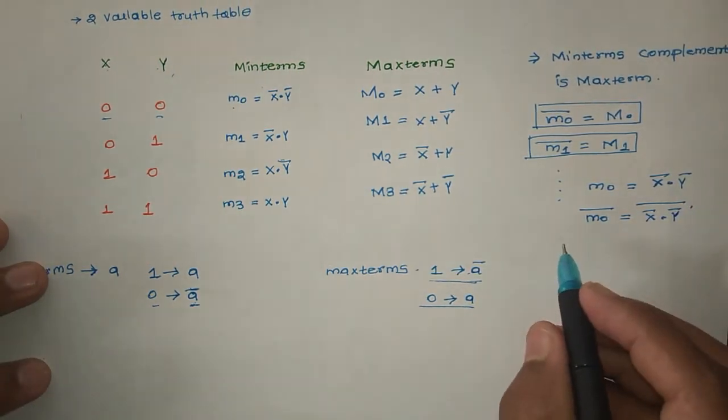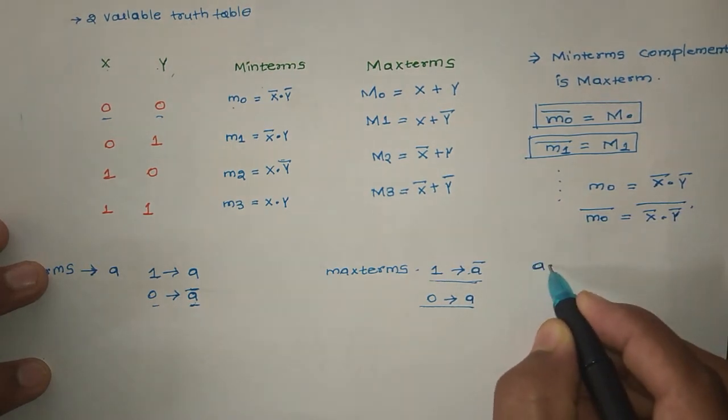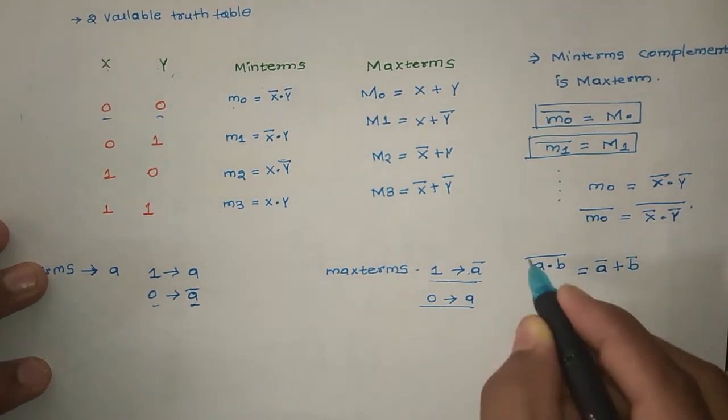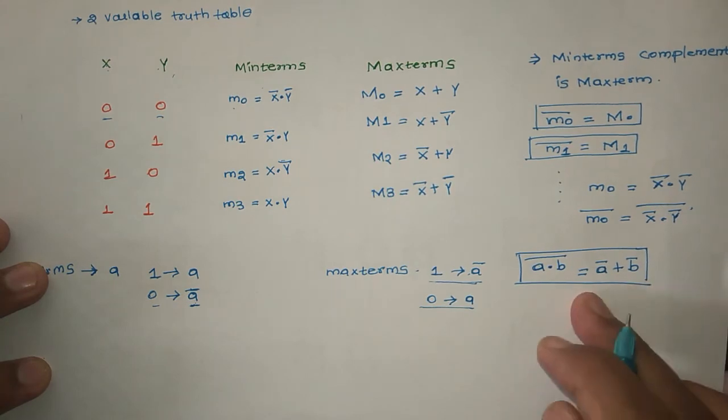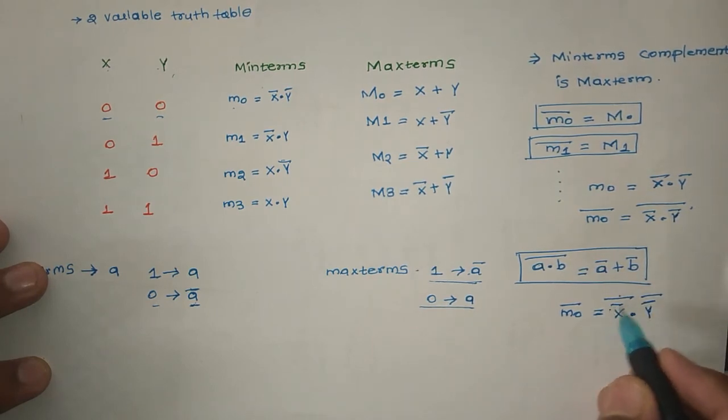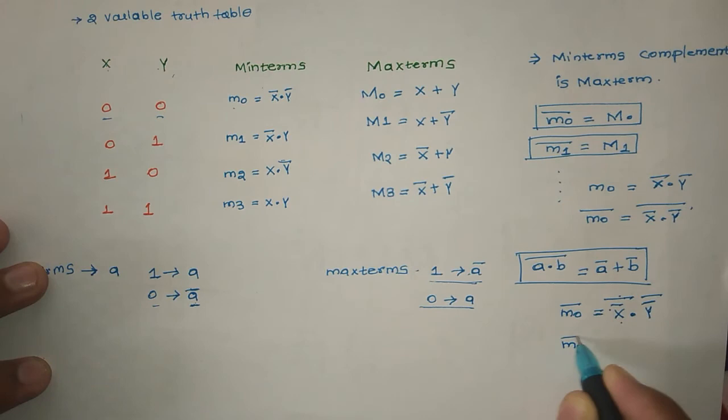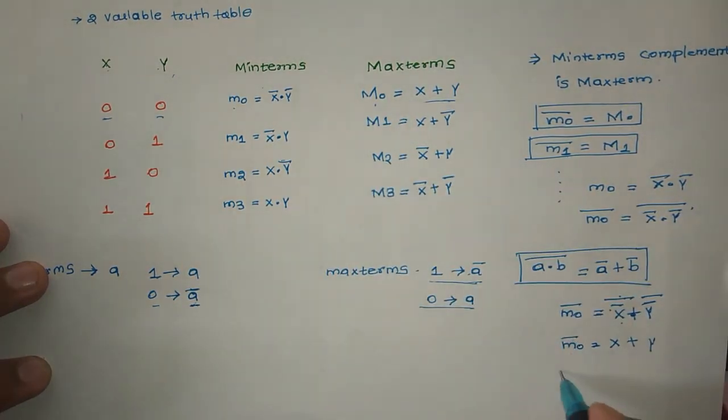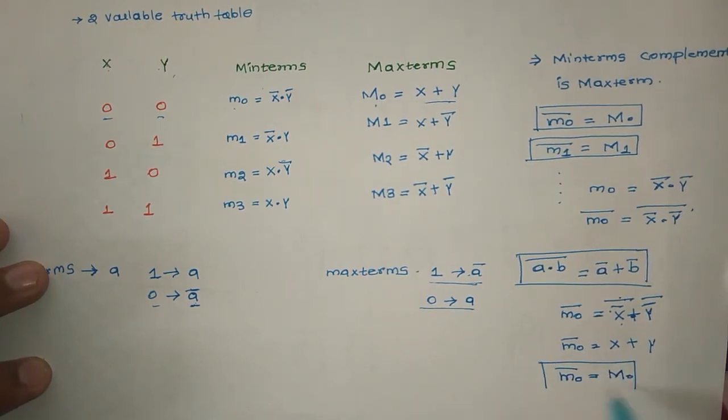So from Boolean algebra, the formula is: A dot B whole bar equal to A bar plus B bar. So if we apply this: m0 bar equal to X bar whole bar plus Y bar bar. Complement of complement is original, so m0 bar is X plus Y. So observe: X plus Y is what? M0. So m0 bar equal to M0. Similarly, if you do all, we get same.